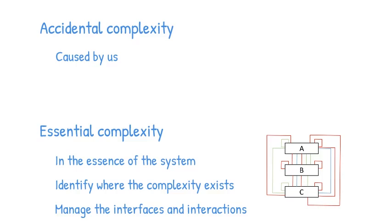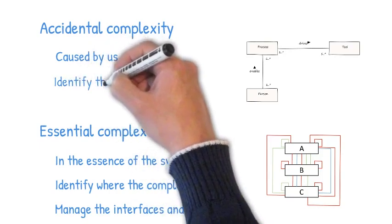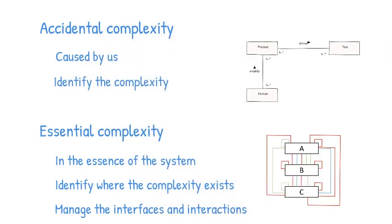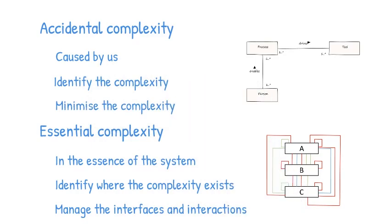With accidental complexity, we can certainly do a lot more, because it's our fault — it's complexity introduced by our people, process, and tools, by inefficiencies, lack of understanding, and communication problems. We can identify where that complexity lives and control it by managing interfaces, just as with essential complexity. But we can also minimize it by applying things like patterns, frameworks, and ontologies.